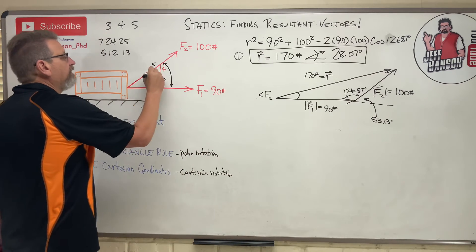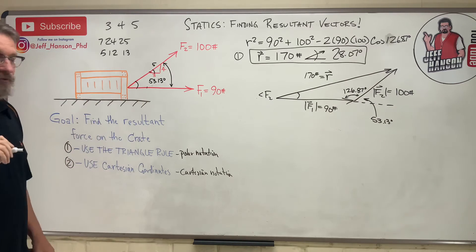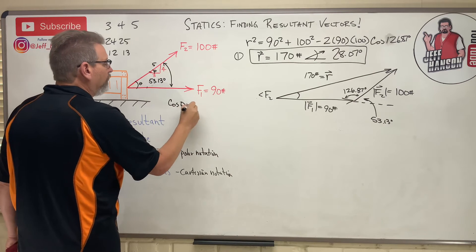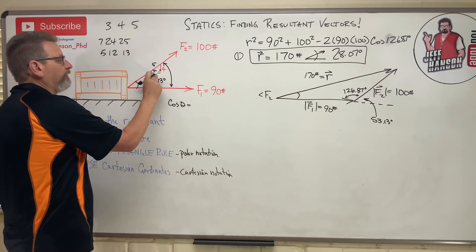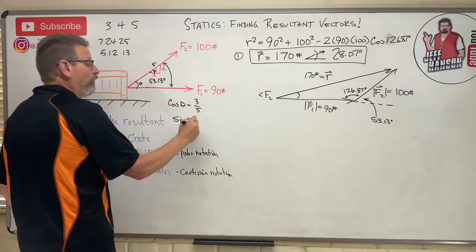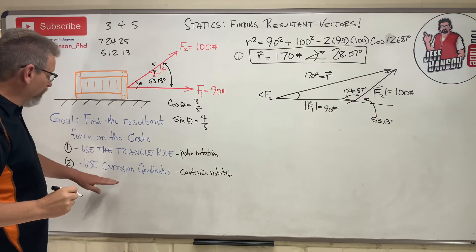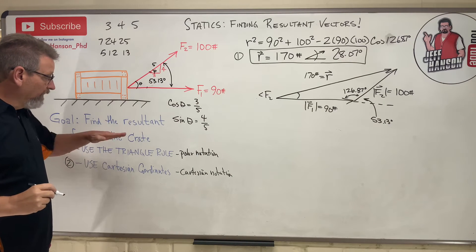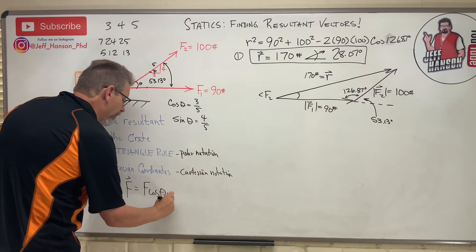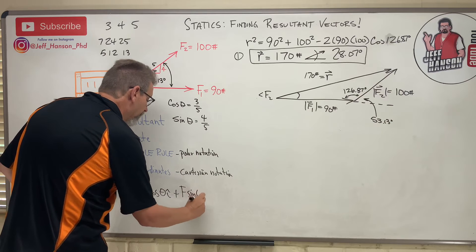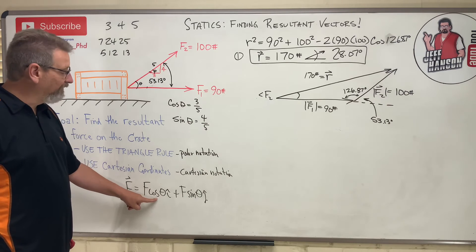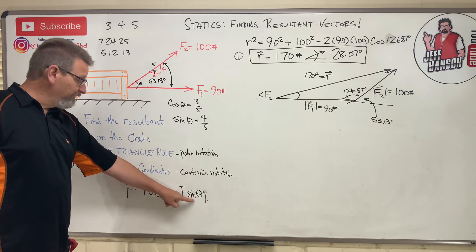This angle and that angle are the same. If I call that angle θ, then cosine θ = adjacent/hypotenuse = 3/5, and sine θ = 4/5. From the last video, the conversion formula is: vector F = F·cos(θ) î + F·sin(θ) ĵ. So instead of cos(θ), I can substitute 3/5, and instead of sin(θ), I can substitute 4/5.